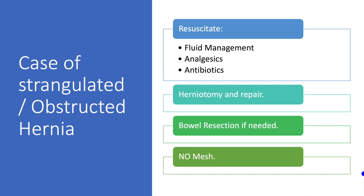If a patient presents with strangulation or obstruction, first resuscitate the patient with fluid management, analgesics, and antibiotics. Then perform herniotomy and repair. If the bowel is necrosed, perform bowel resection. A mesh should not be used in these cases.